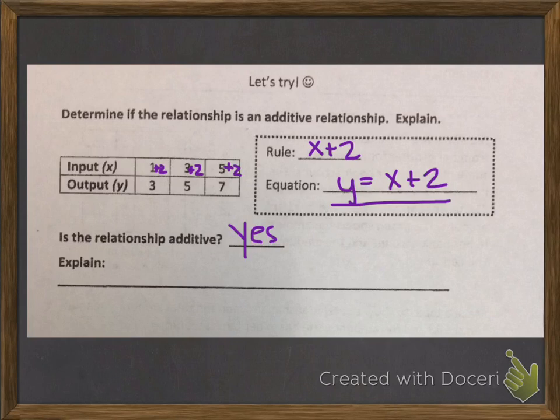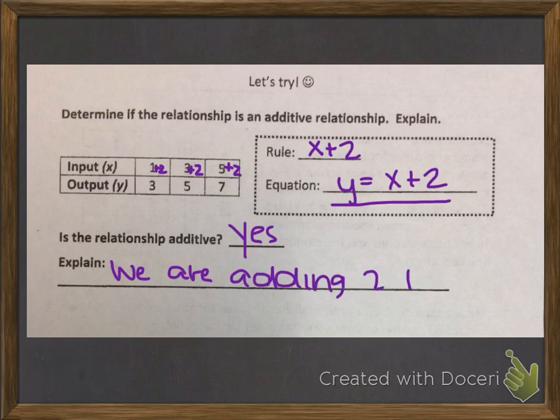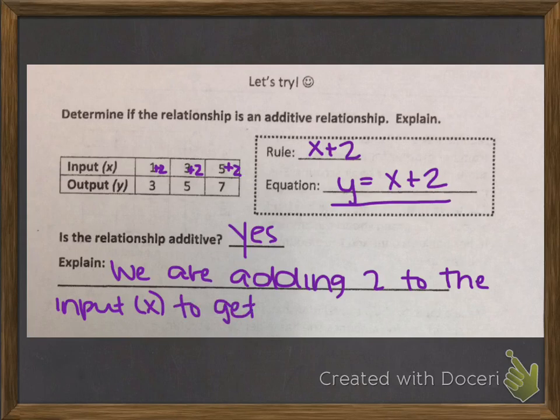2 is a rational number, so this is an additive relationship. We are adding 2 to the input, which is our x value, to get the output, which is our y.